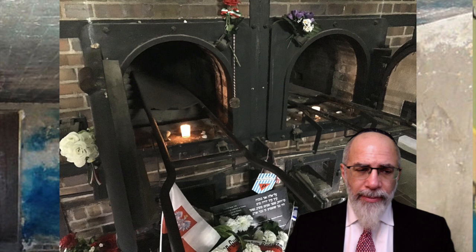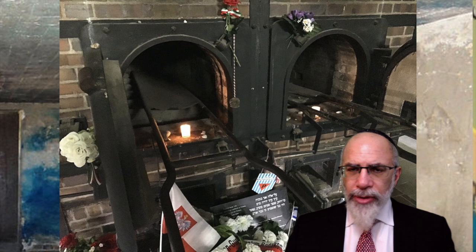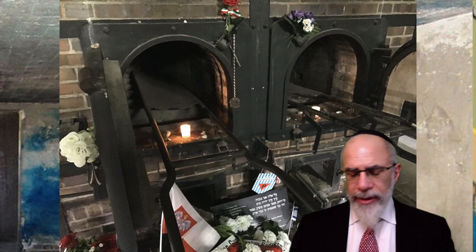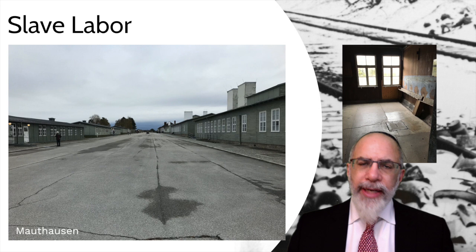This photograph is from Mauthausen. Someone has lit memorial candles in the openings of the ovens, and there are other insignia from Austria. The crematoria were notoriously unreliable, constantly breaking down. Quite often the bodies simply had to be burned out in the yard, as seen here in a clandestine photograph from the period.